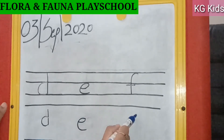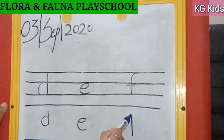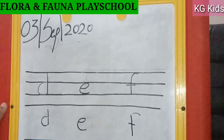And for F, we will make a standing line, put a cap on it, and put a line on it. This is F.